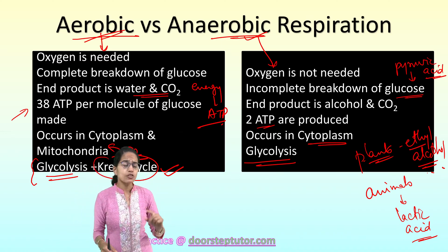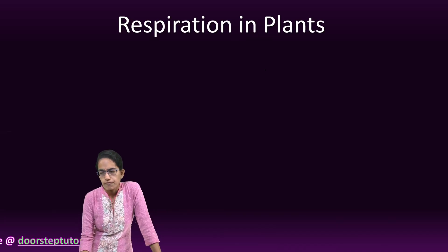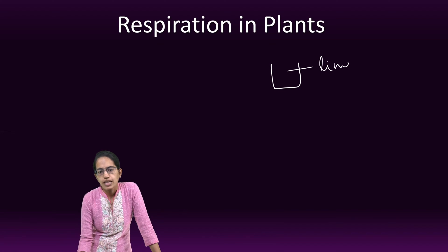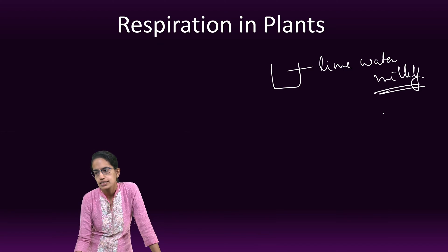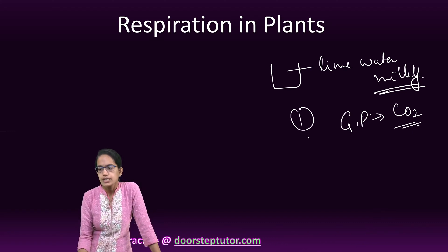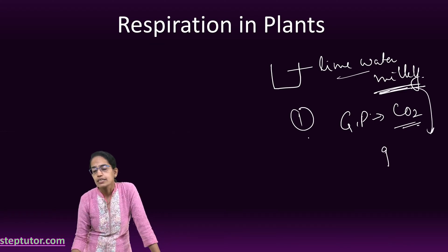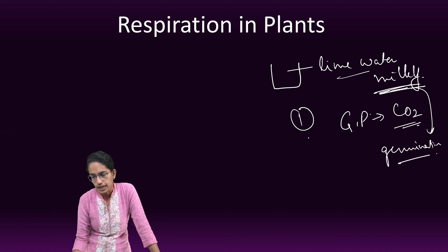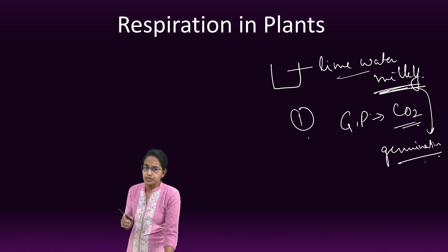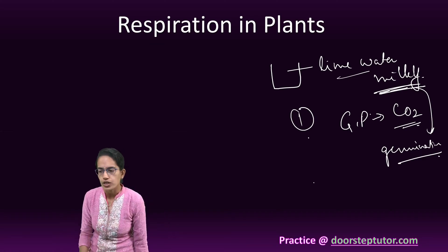If there is lime water present, it would turn milky because carbon dioxide is released, indicating that green plants produce carbon dioxide in the process of respiration. When the lime water turns milky, it also indicates that seeds are germinating and producing carbon dioxide during respiration. If a seed is boiled, it won't produce carbon dioxide and won't turn the lime water milky.